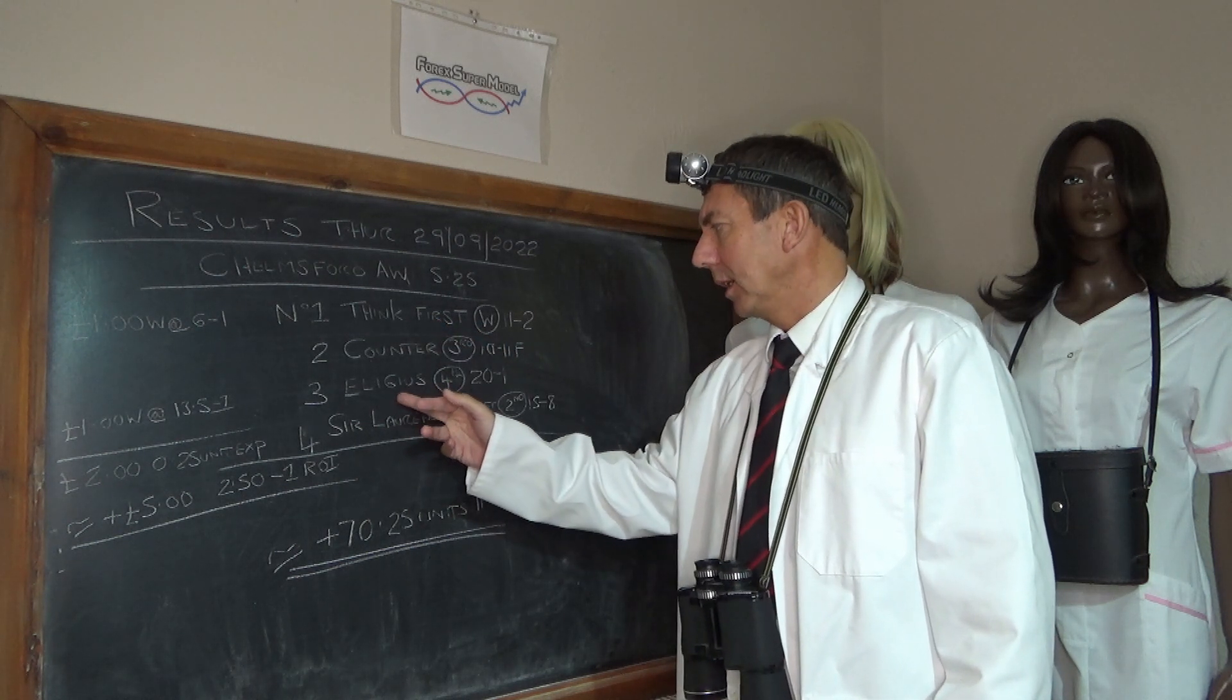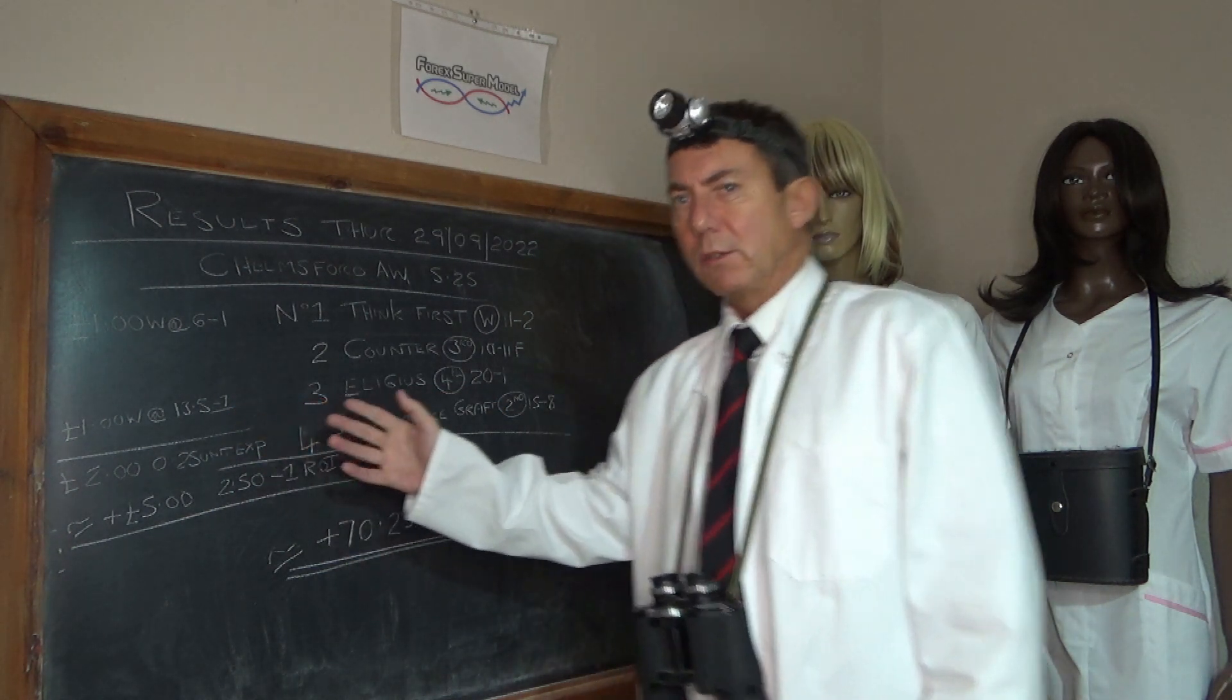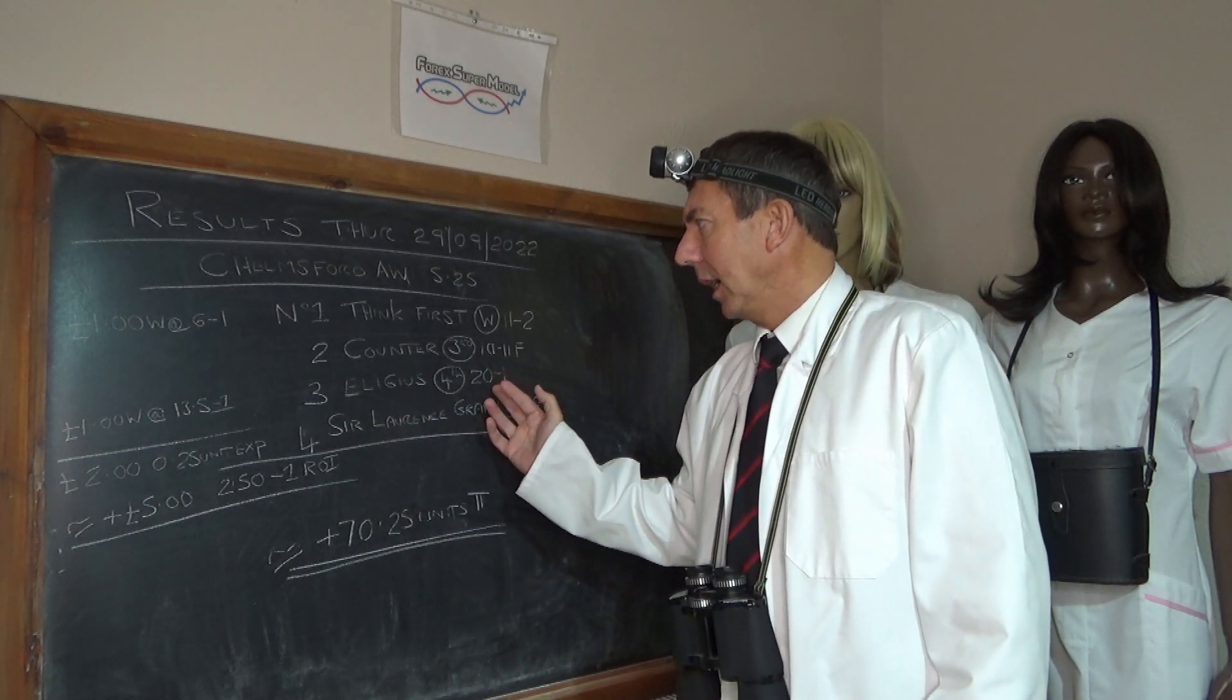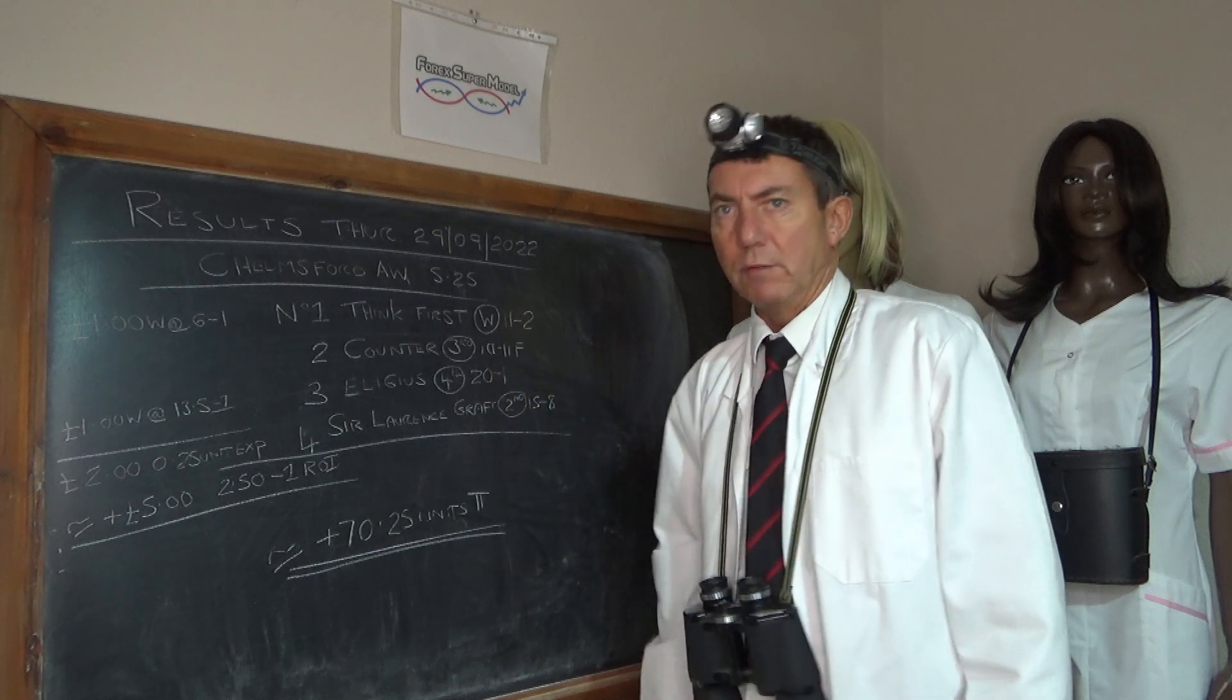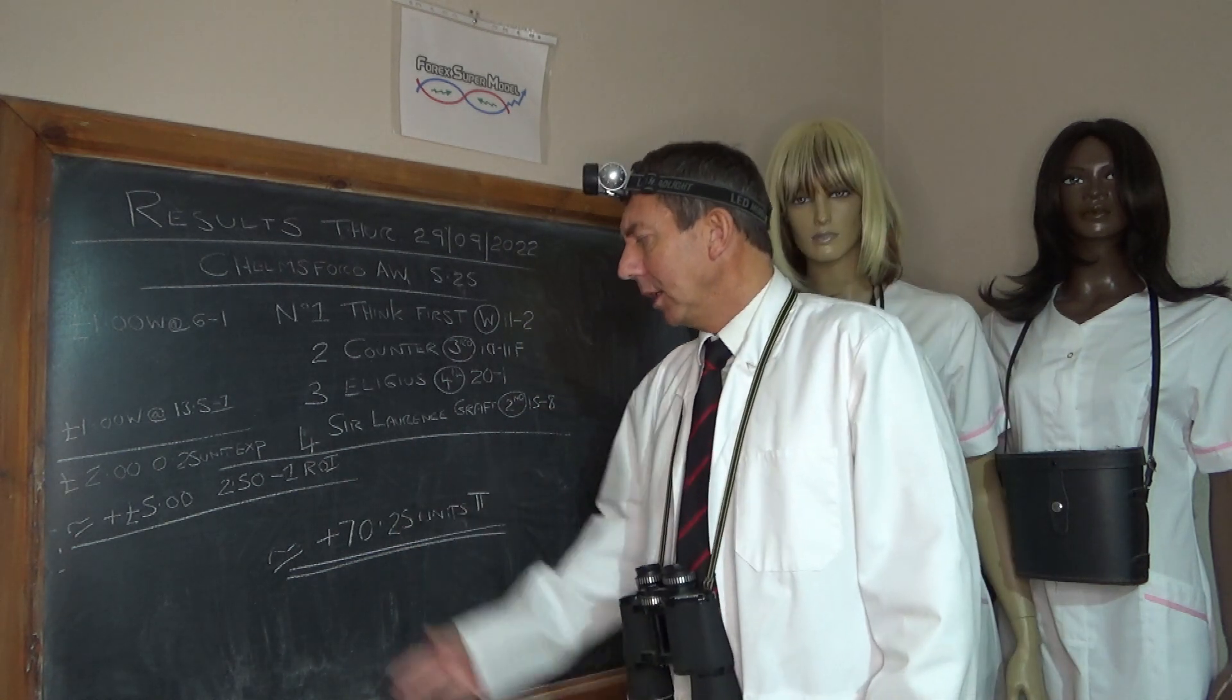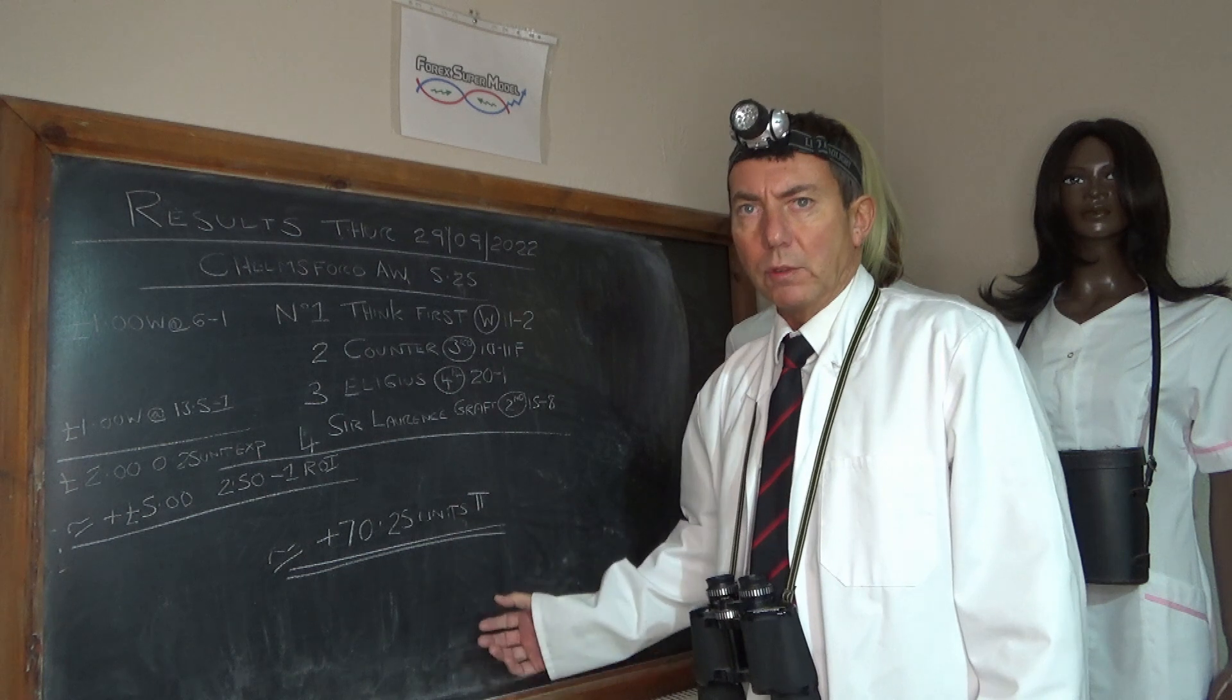And this was really the unknown, the Elijah's. At the time we thought we'd done all right at 13 and a half to one, but you could have got about 20, 25 to one at one stage. And think first was drifting all over the place. It went out to sevens, went back into about nine to two and ended up being returned at 11 to two. Anyway, the market was all over the place. But so that panned out pretty nicely for us, got the account up into the seventies again. So we're plus 70.25 units in profit overall approximately.